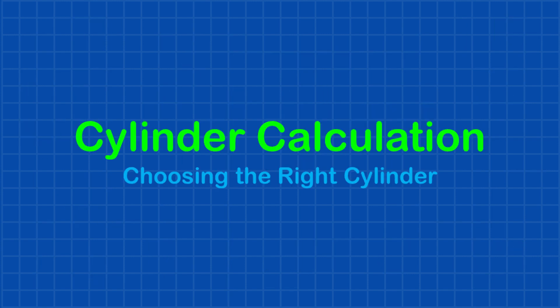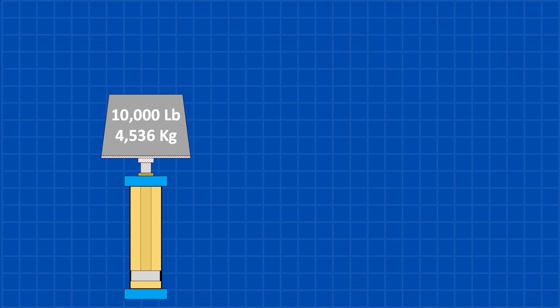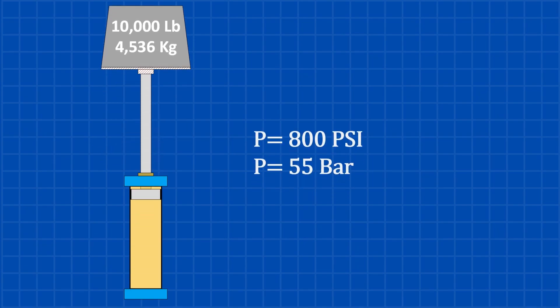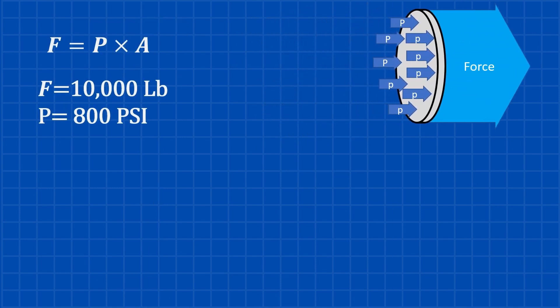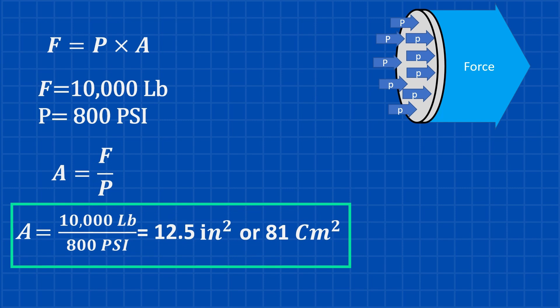To choose the right cylinder, we first need to figure out the bore size. And for that, we have to decide on the system pressure. In this design, we're going with 800 psi or 55 bar. Force equals pressure times area. Since we have a force of 10,000 pounds and a pressure of 800 psi, we can calculate the piston area. The piston area is found by dividing the force by the pressure, which gives us 12.5 square inches or about 81 square centimeters.